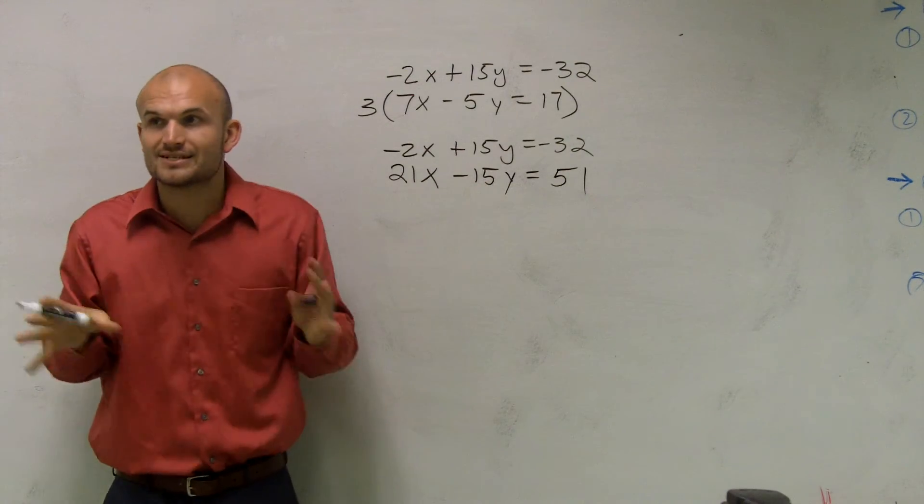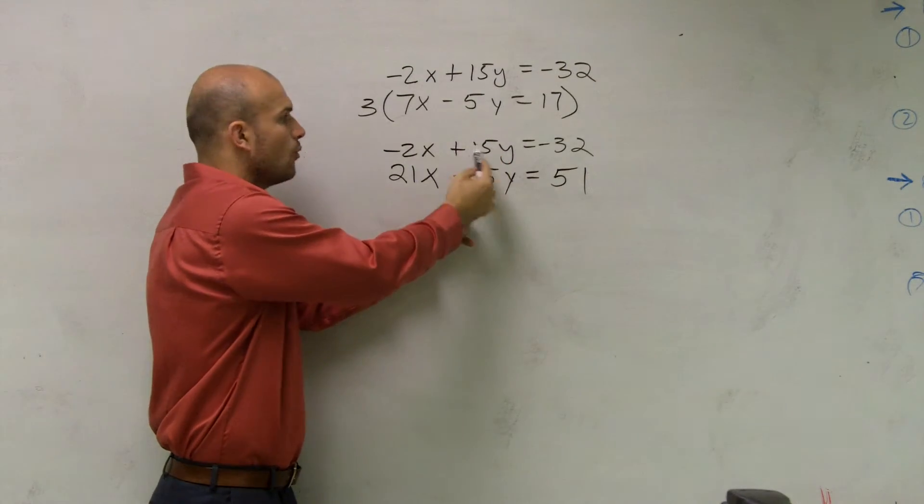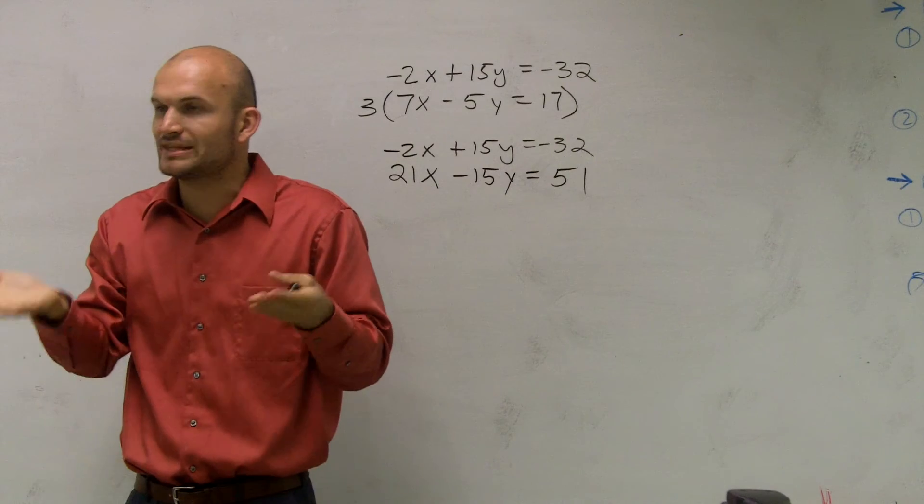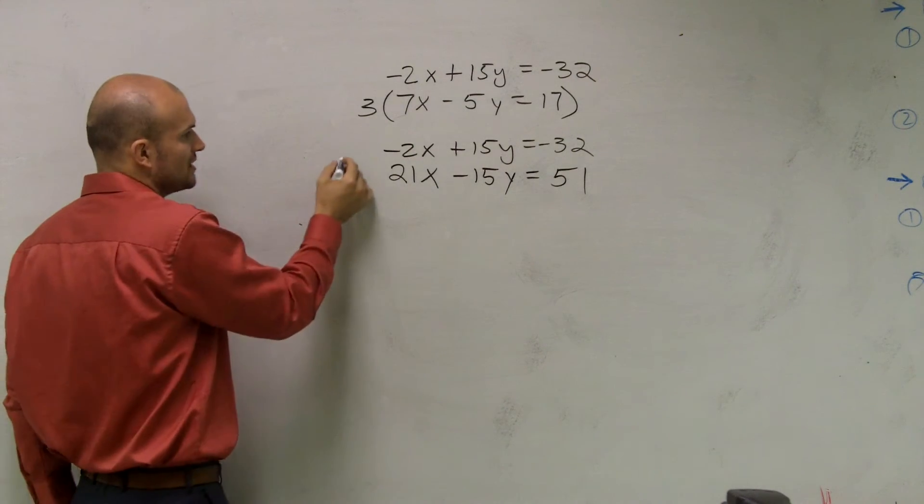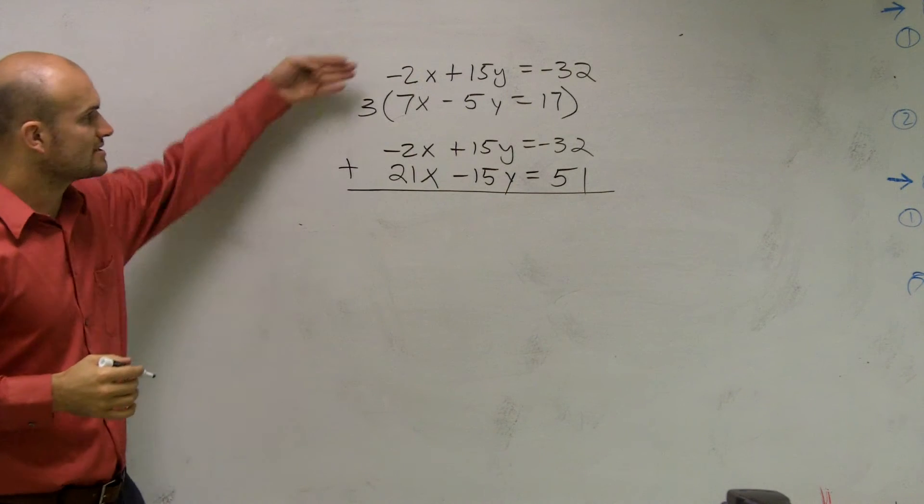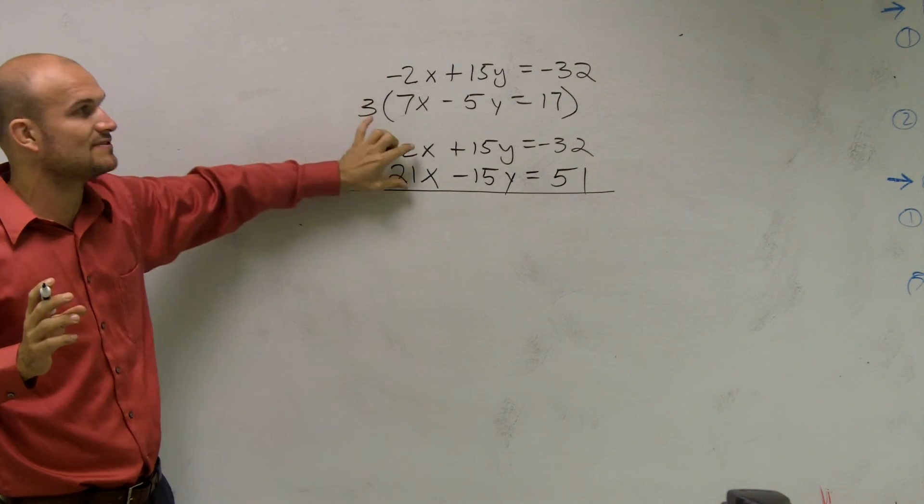Now, do you guys see what I just did? Now what we do is we have the same coefficient. One's positive, one's negative. So when we have the exact same coefficient with opposite signs, we can use elimination by addition. So it's hard. I understand. You're going to have to pick a variable that you can get to have the same coefficient.